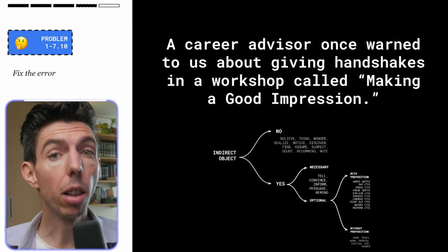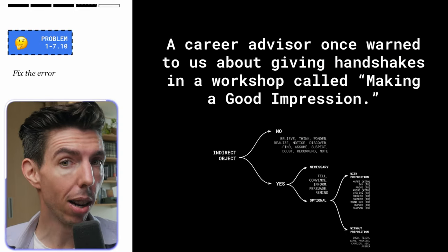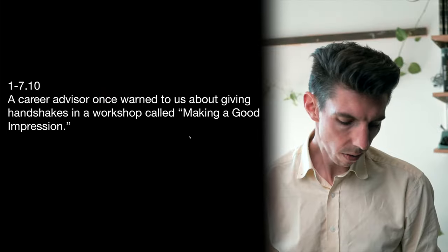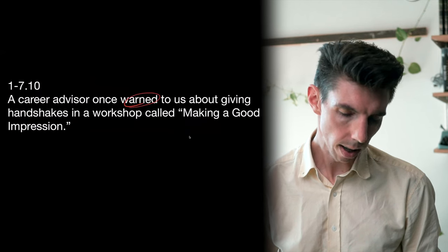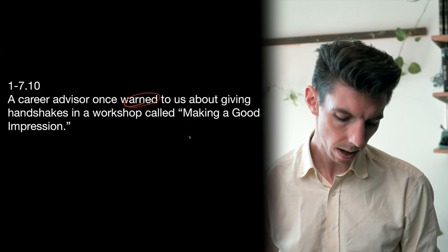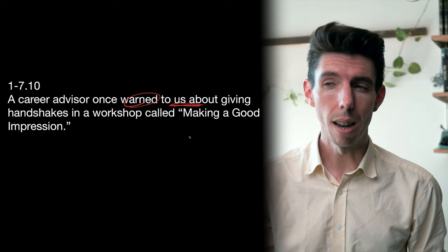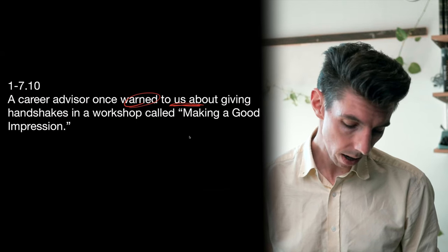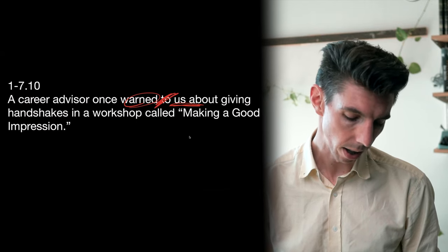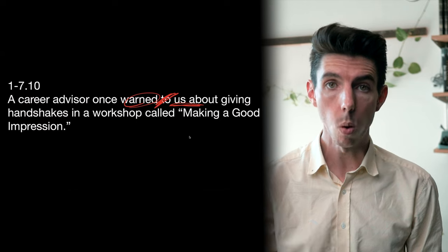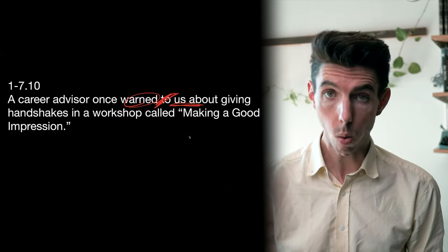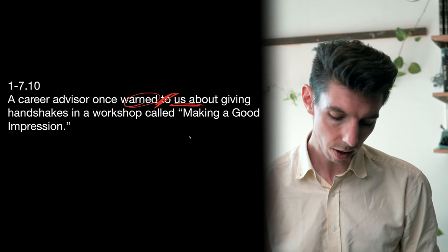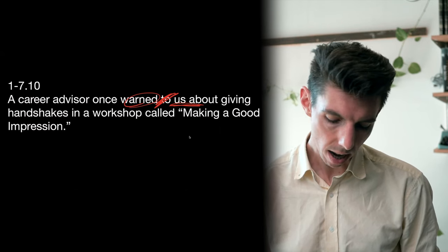Here's another one with 'warn.' The sentence reads 'A career advisor warned to us...' — 'warn' is our reporting verb with an indirect object 'us.' Warn is a reporting verb that can take an indirect object, but it will not take a preposition. So the advisor warned us about giving handshakes, or he could just warn about giving handshakes without an indirect object. It doesn't require an indirect object, but if you include one, it does not take a preposition.